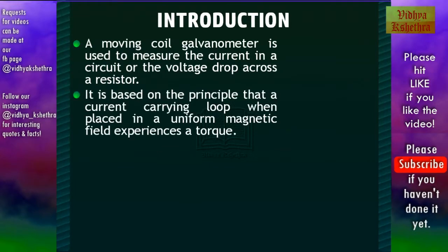Now this moving coil galvanometer is based on the principle that a current carrying loop when placed in a uniform magnetic field experiences a torque.